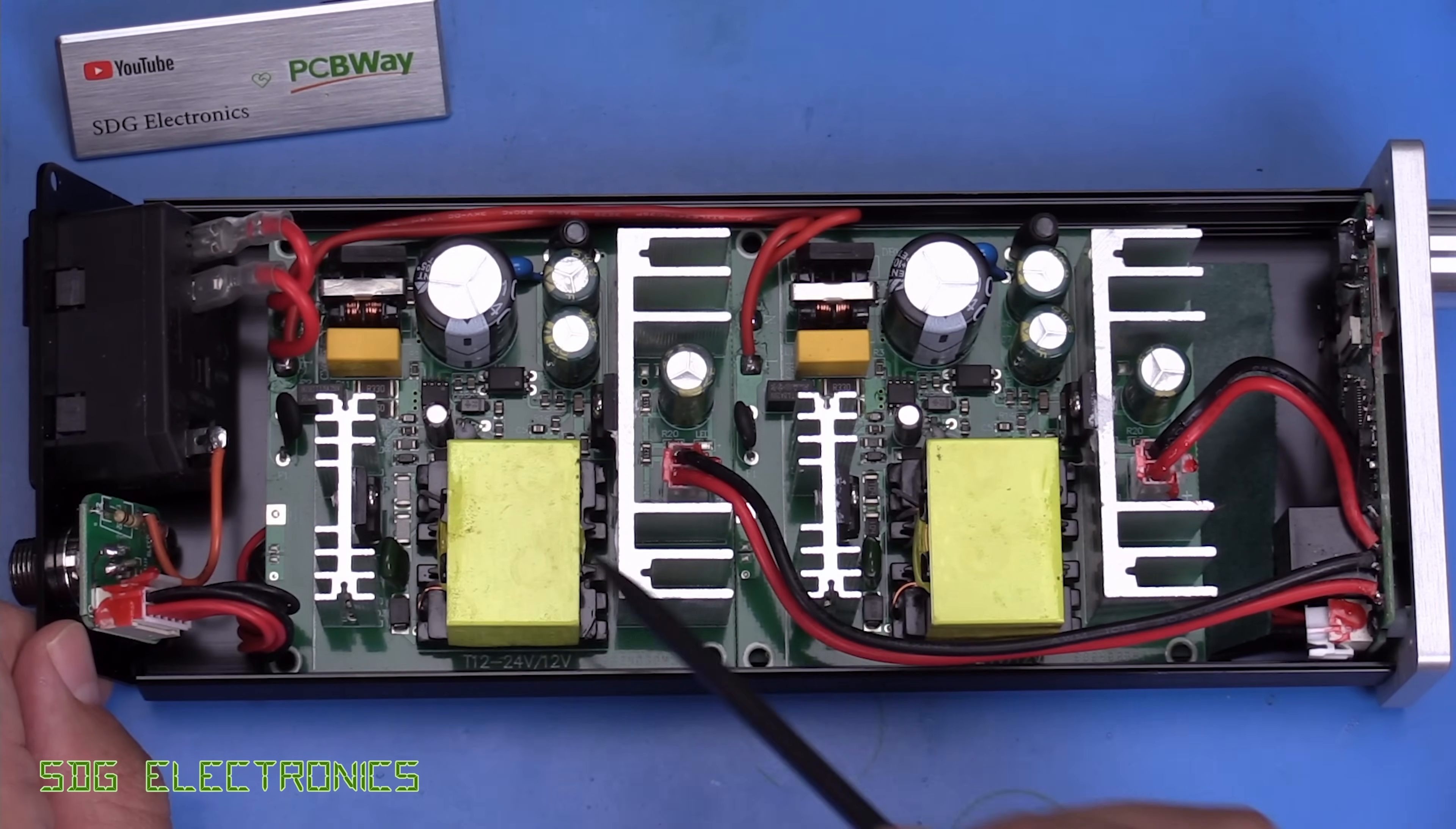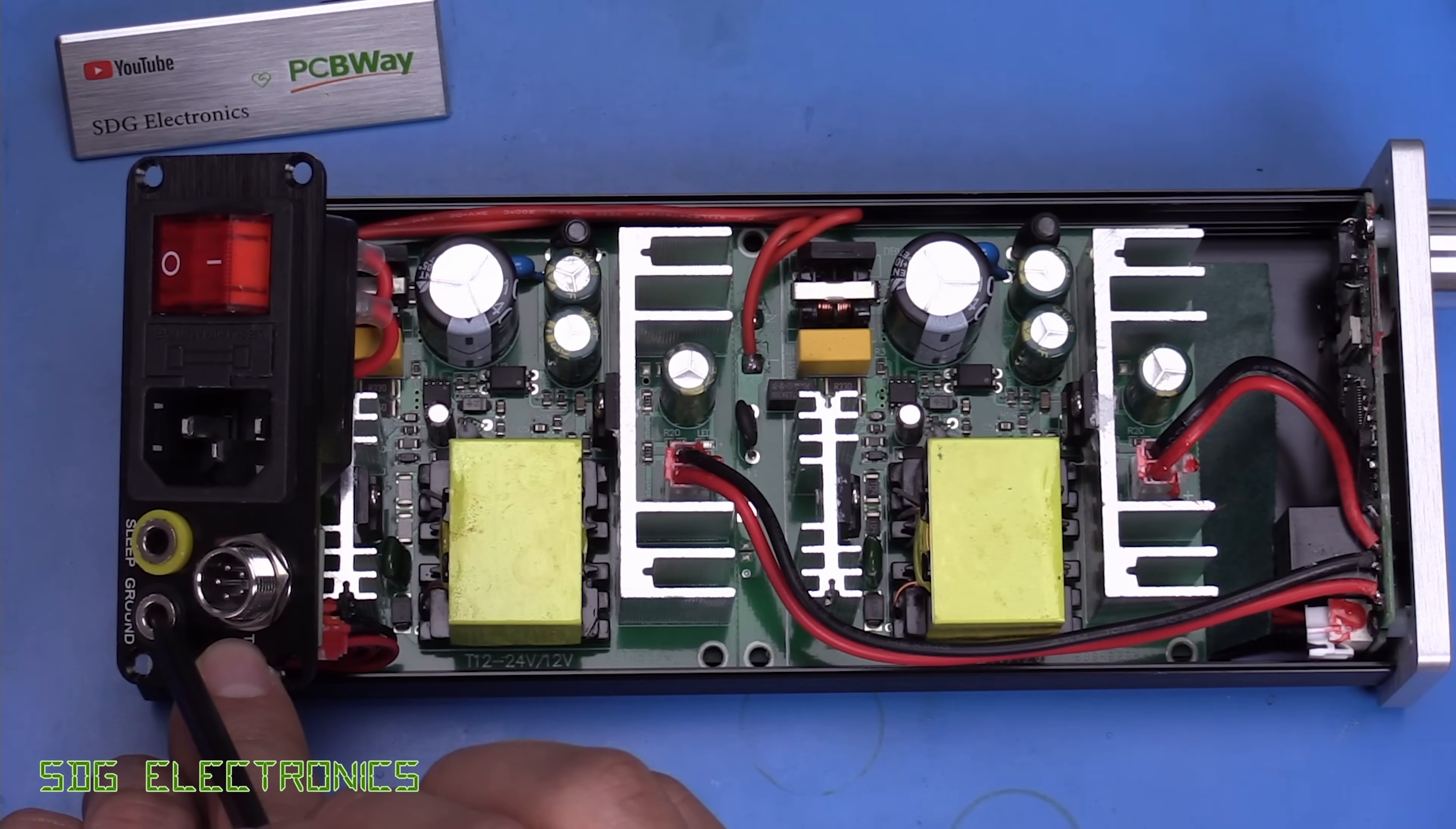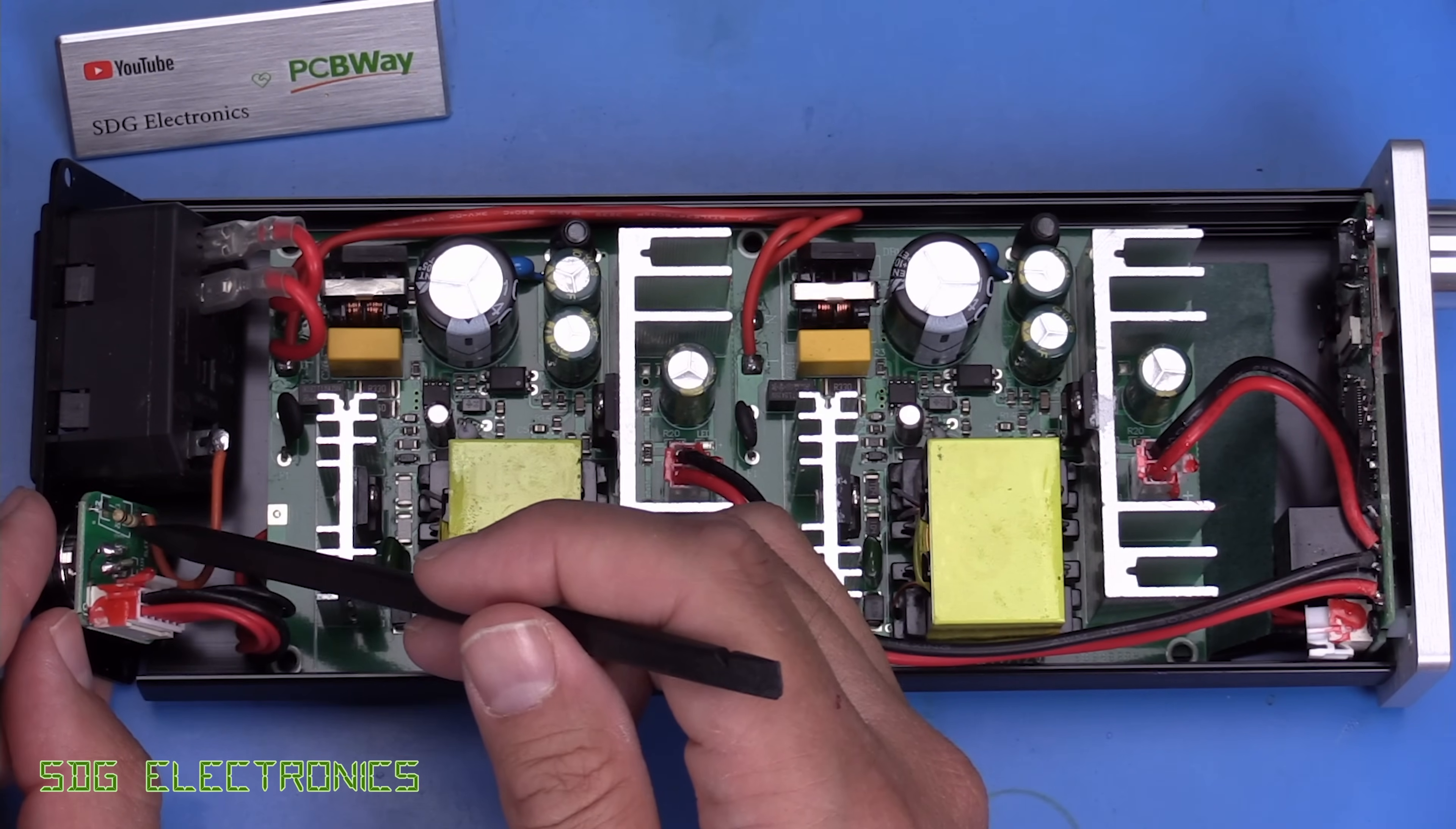One thing to note is the earthing as usual on these things is pretty poor. So we've got an earth connection from the IEC connector to this little PCB at the back here. It goes directly to the ground terminal. And it also goes to one of the pins on the connector, which is presumably to earth the cartridge.